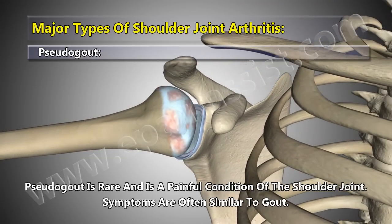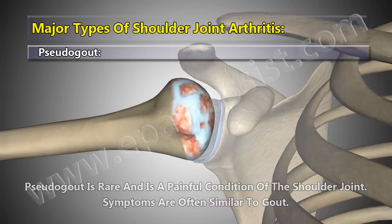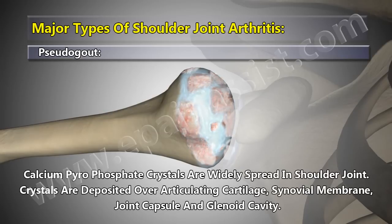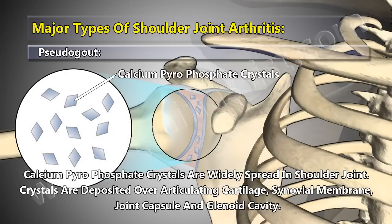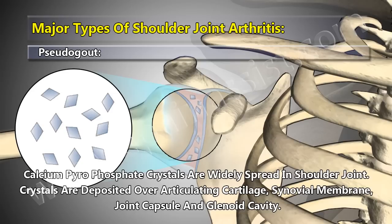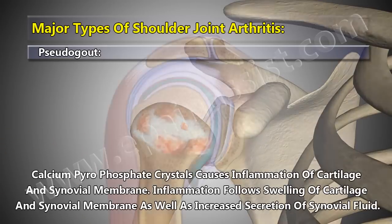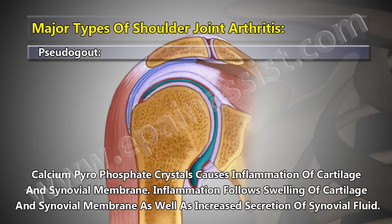Pseudogout is a painful condition of the shoulder joint with symptoms often similar to gout. Calcium pyrophosphate crystals are widely spread in the shoulder joint, deposited over the articulating cartilage, synovial membrane, joint capsule, and glenoid cavity. Calcium pyrophosphate crystals cause inflammation of the cartilage and synovial membrane, followed by swelling and increased secretion of synovial fluid.